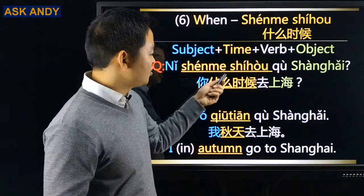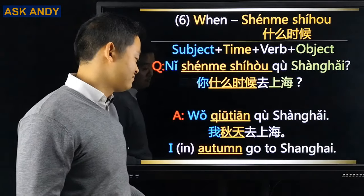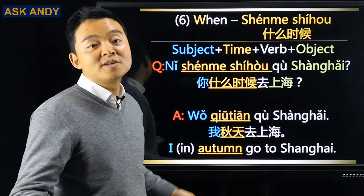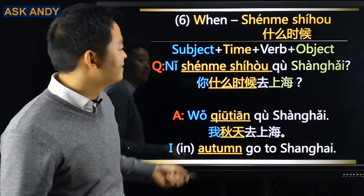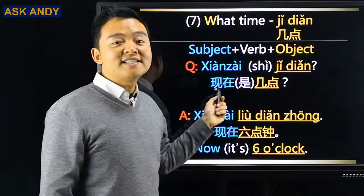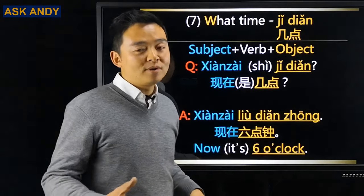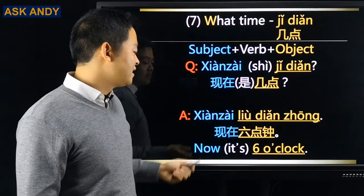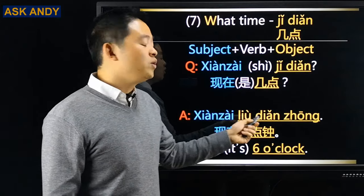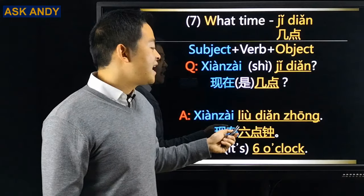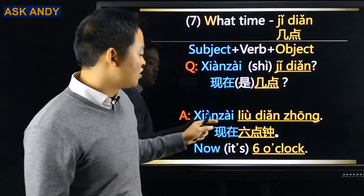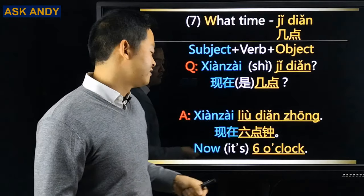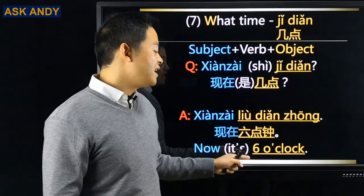Quote and replace the question word with new information. Autumn is the best season to visit Shanghai! 现在是几点? / 现在几点? → 现在六点钟 (It's six o'clock now) — we omit 是 here.